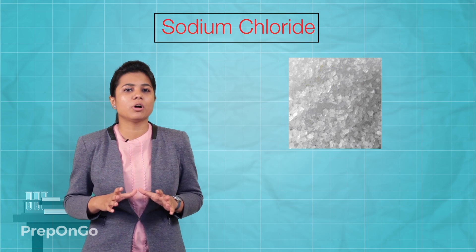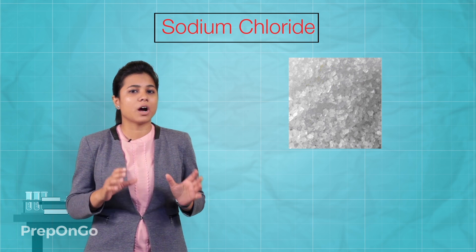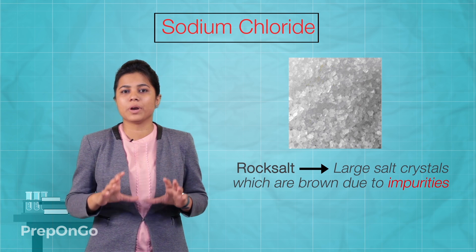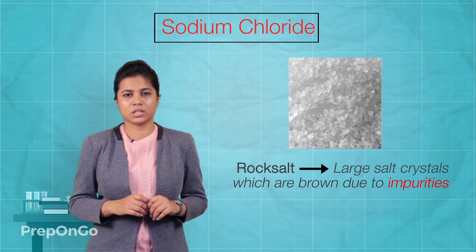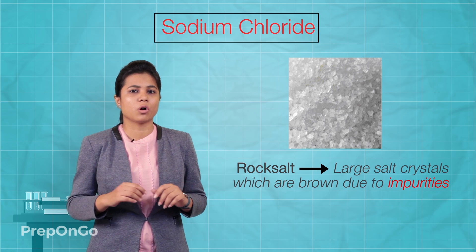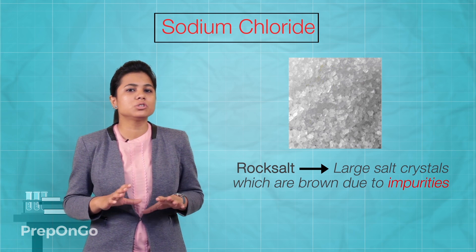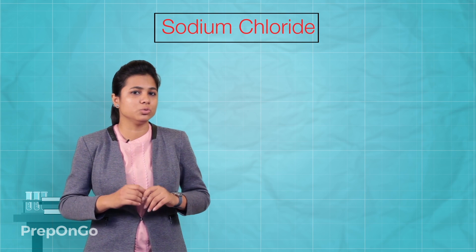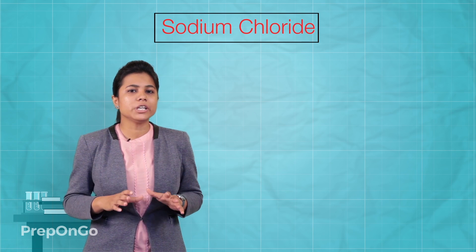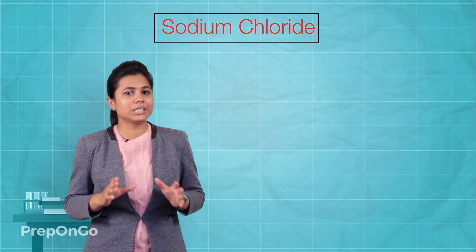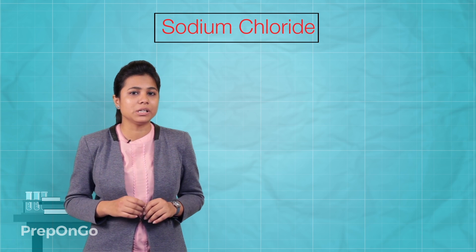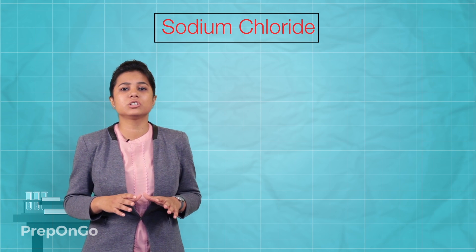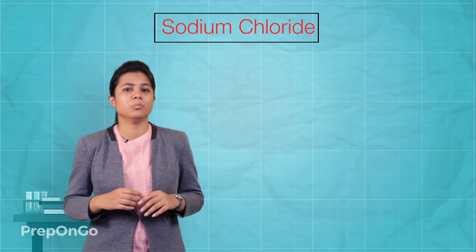There are many deposits of solid salts found across the world. These large crystals are brown in color due to impurities, and are also called rock crystals. Common salt is actually a raw material for many materials we use in our daily life. By doing experiments, we can extract raw materials such as sodium hydroxide, bleaching powder, washing soda, baking soda, and many more.